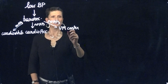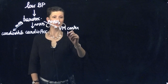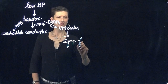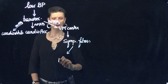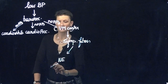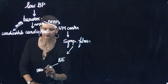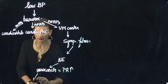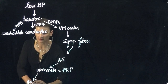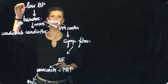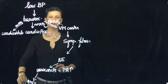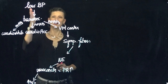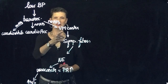Our vasomotor center is going to respond by activating our sympathetic fibers to secrete norepinephrine. And of course, norepinephrine is going to cause vasoconstriction, which increases peripheral resistance. And we know that is going to therefore bring our blood pressure back up. Remember, we started with too low of a blood pressure, and our goal is to bring it back up to return our blood pressure to homeostasis. So we have succeeded in that with the help of our baroreceptor reflex working through our vasomotor center.